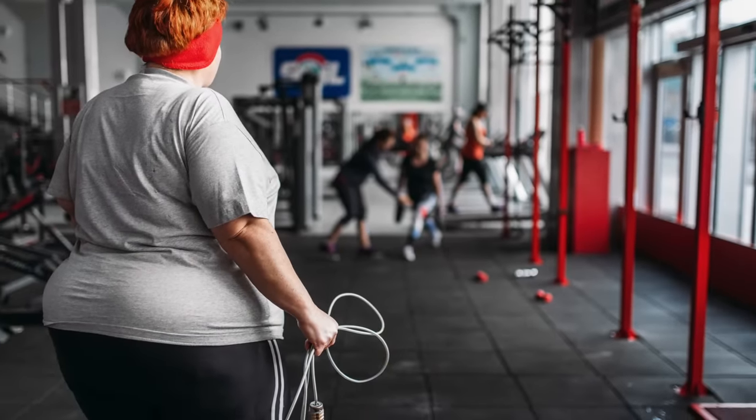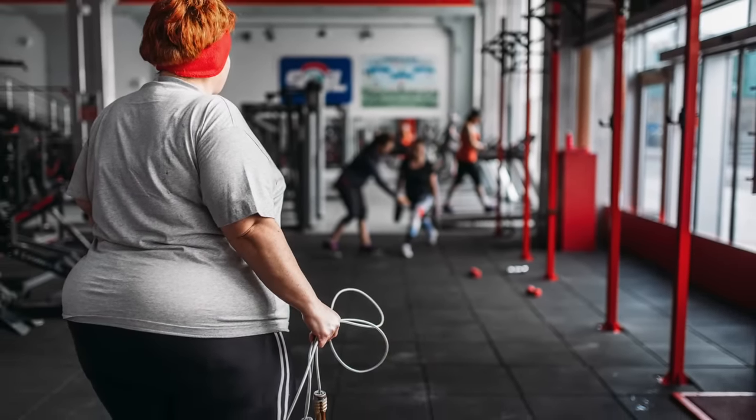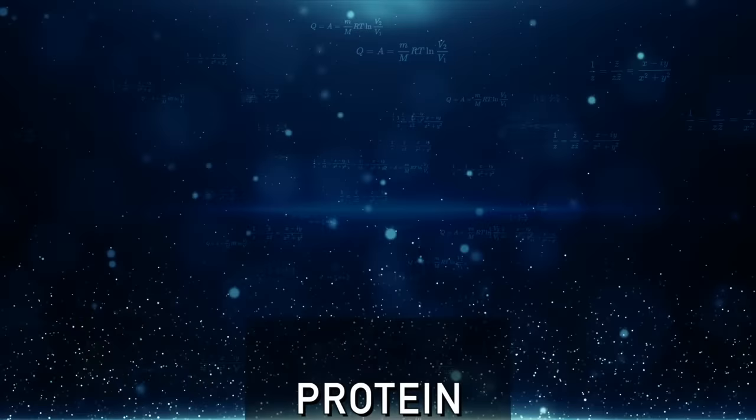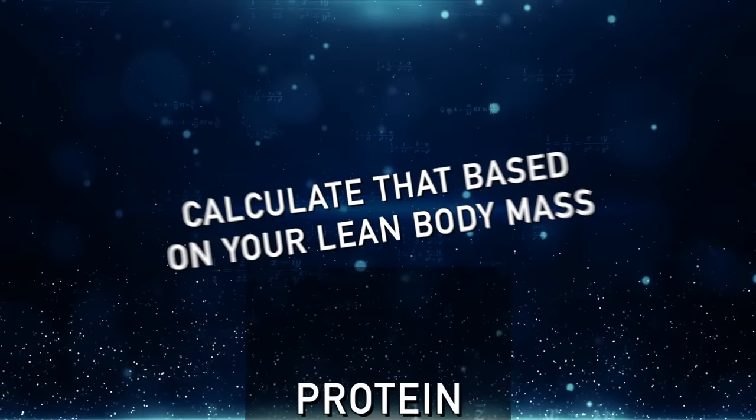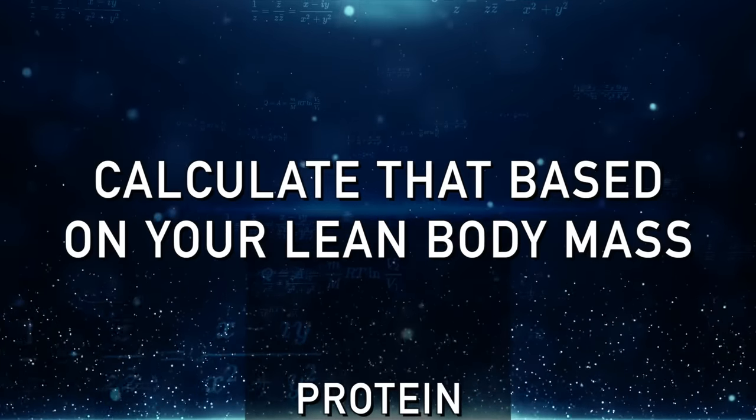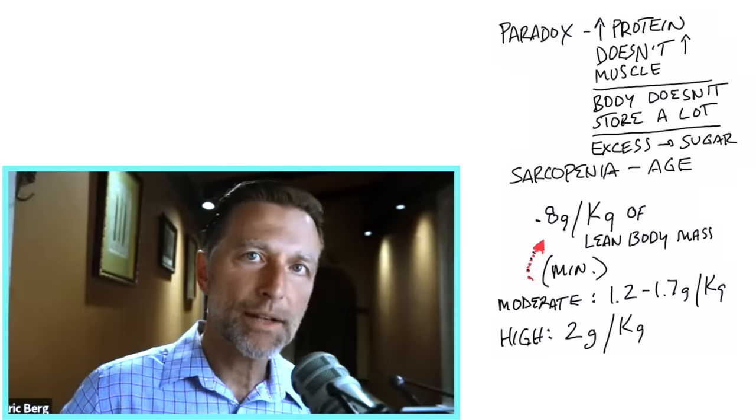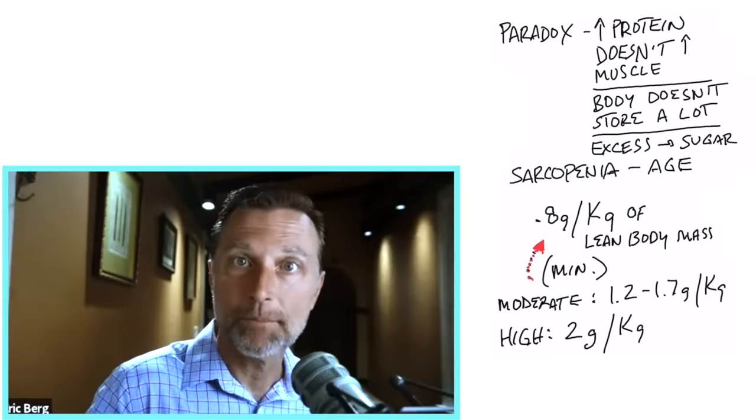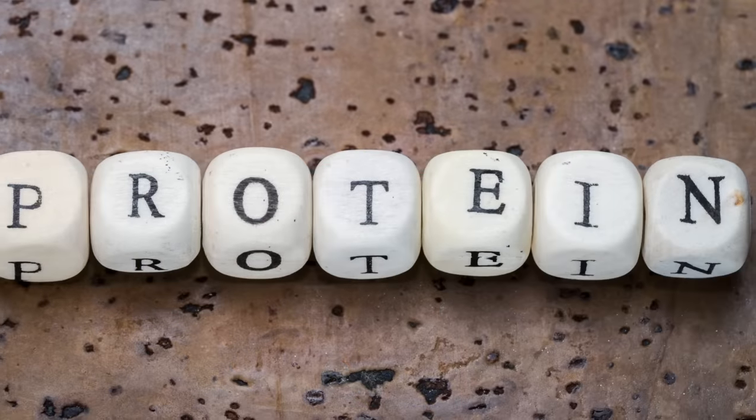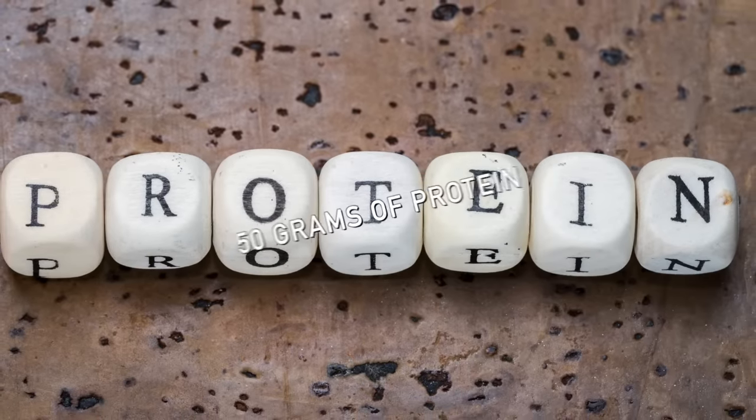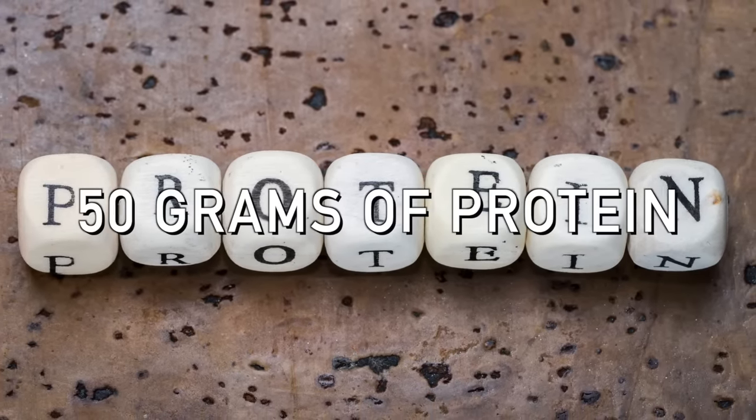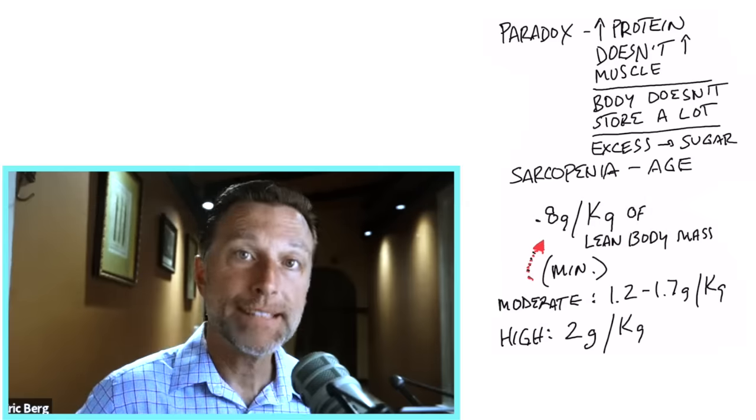So let's say, for example, you weigh like 400 pounds and you have a lot of extra fat. It doesn't mean you should start massively increasing your protein. You should calculate that based on your lean body mass. So 0.8 grams per kilogram of lean body mass is kind of like on the low end. That's like the minimum amount. And that on average could be around 50 grams of protein per day.